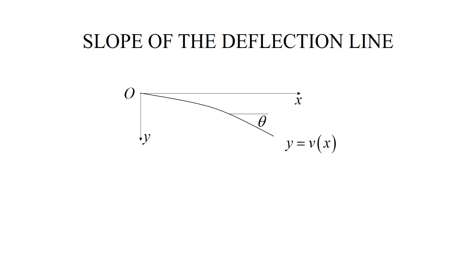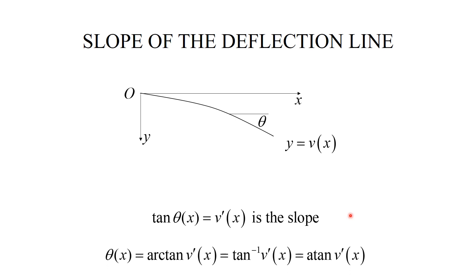In addition to deflections, we would like to identify the slope. The slope can be defined by looking at the tangent angle theta. The slope by definition is tangent theta, and can also be expressed as the derivative of v with respect to x. We can solve for theta using arctangent. Different books use different definitions, but they are all the same.